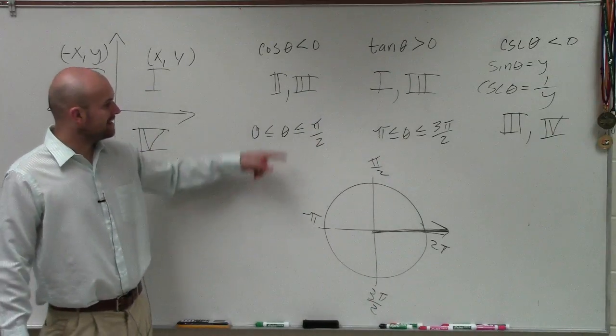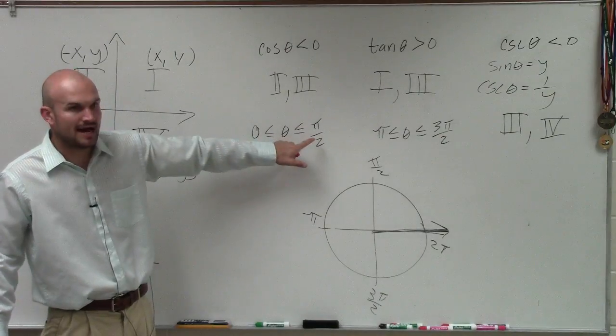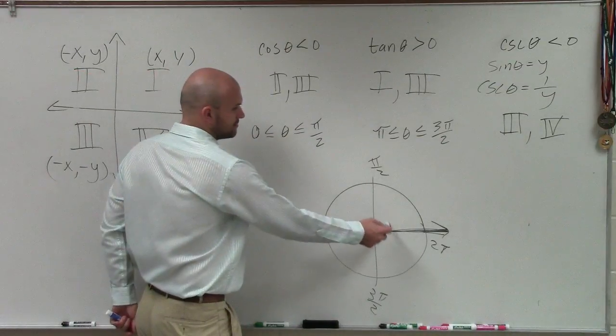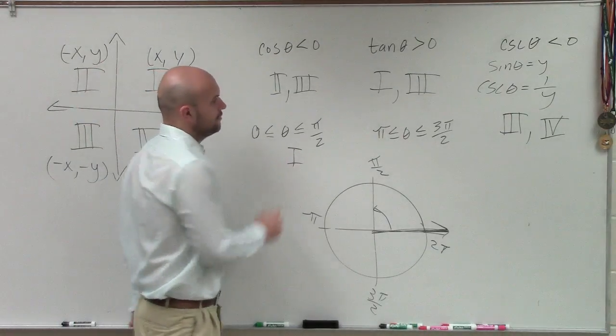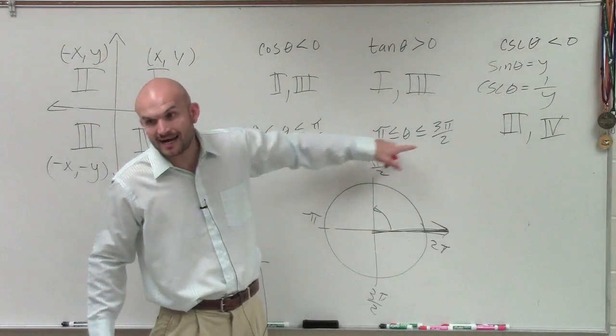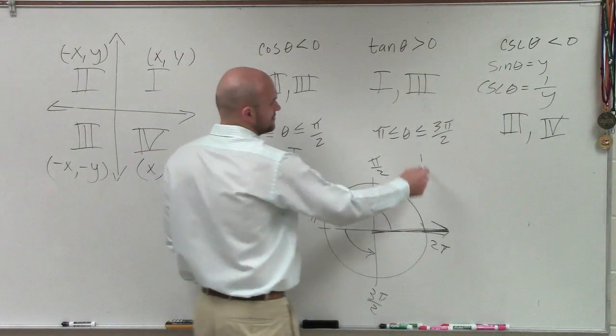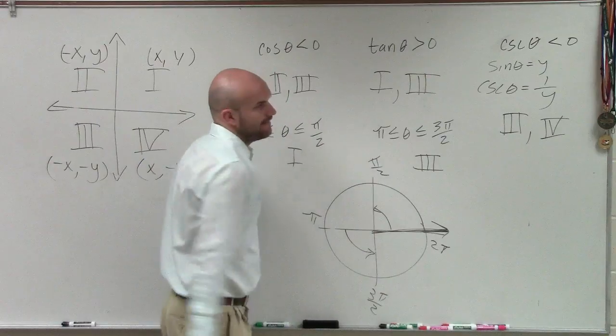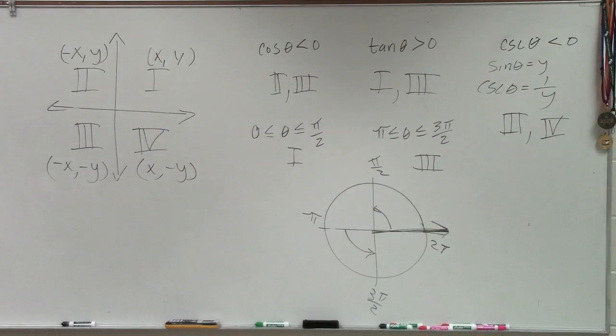So if I'm trying to find what angle, which quadrant has to be between 0 and pi over 2? 0 to pi over 2. So that quadrant is first. What about if I said it has to be between pi and 3pi over 2? That's the third quadrant. So that's how you determine the quadrants that you're in.